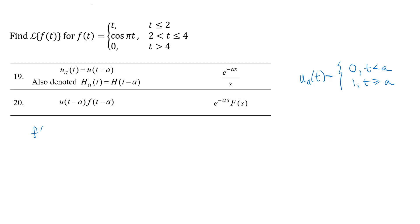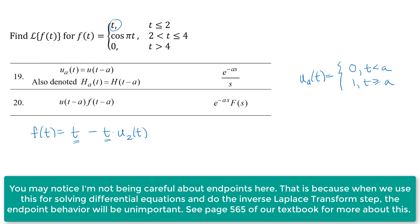I'm going to start with f of t equals t. That's how our piecewise defined function starts, and I have that function until t equals 2. At t equals 2, I want that function to go away, so I'm going to use my unit step function to turn on a term that will cancel out my t term. That u sub 2 of t will be 0 when t is less than 2, so that term won't be there. But when t is 2 or bigger, I'll end up with t minus t times 1, so those two terms cancel out.